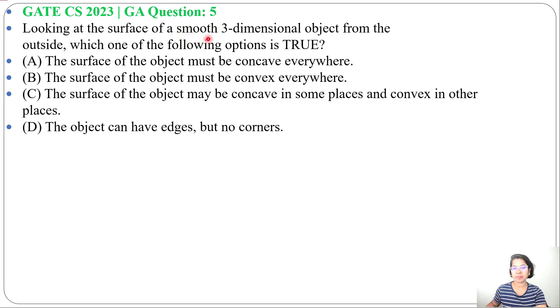Looking at the surface of a smooth 3-dimensional object from the outside, which one of the following options is true? Four options are given. We are looking from outside, so it may be a filled 3-dimensional object or a hollow 3-dimensional object.